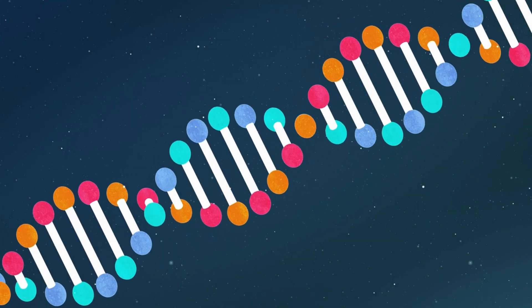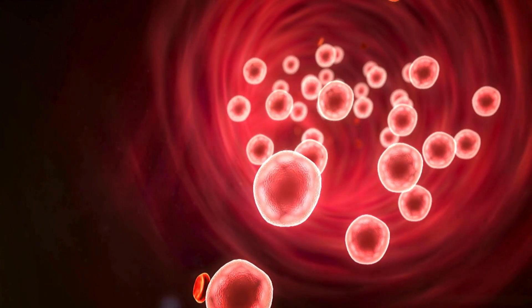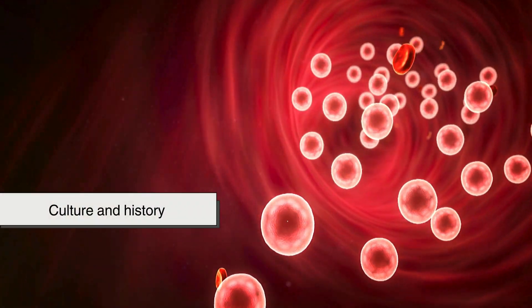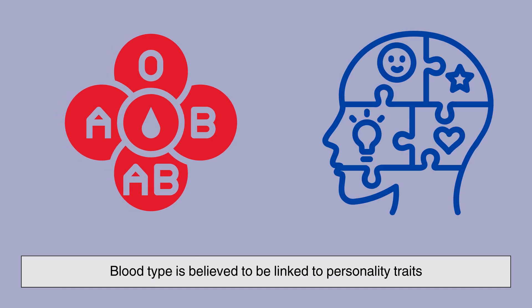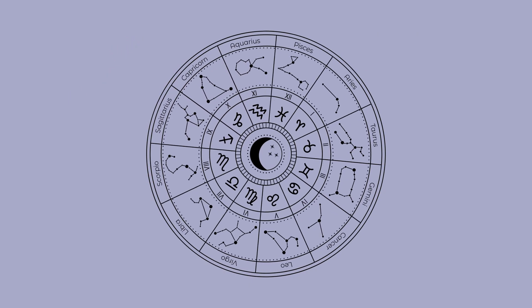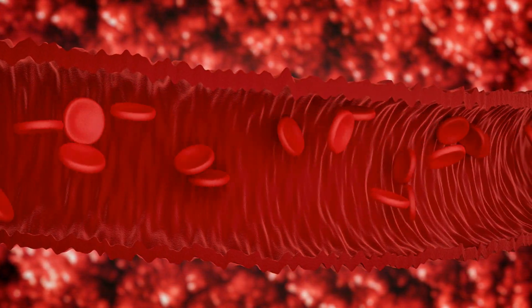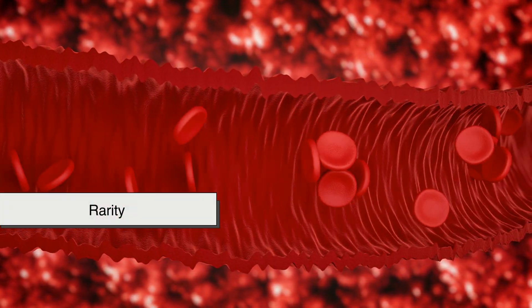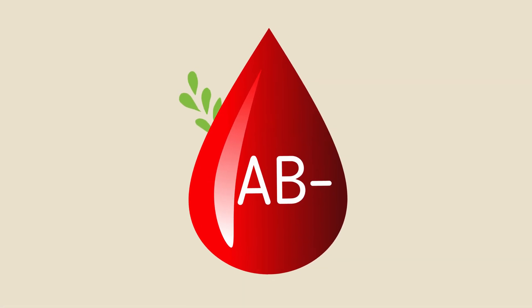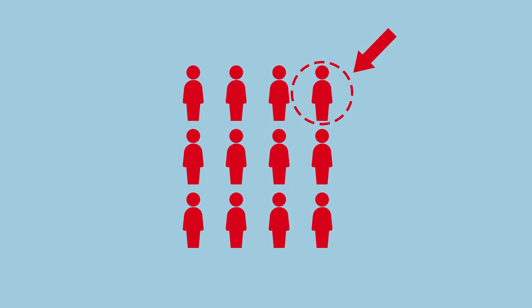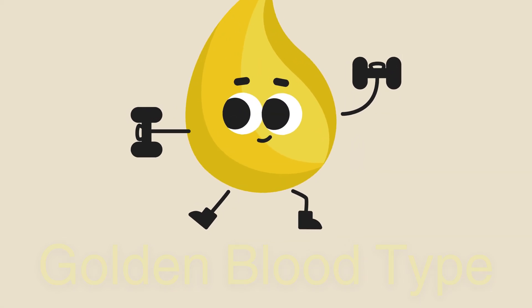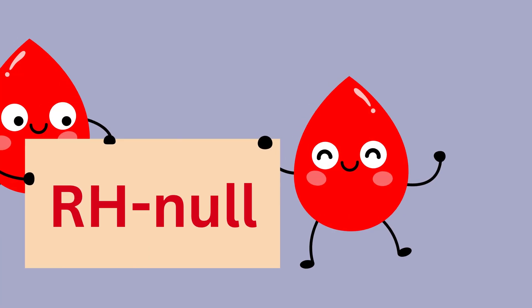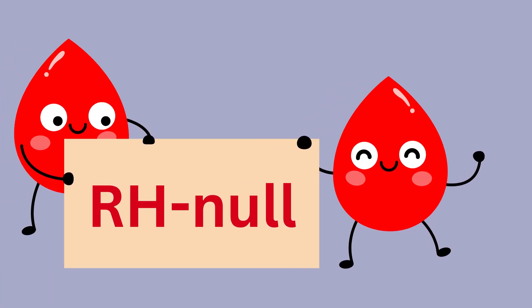Beyond medicine and genetics, blood types have also played interesting roles in culture and history. In Japan, blood type is believed to be linked to personality traits, similar to how astrology is viewed in Western cultures. Another fascinating aspect of blood types is their rarity — for example, AB negative is the least common, making up less than 1% of the population. There is also a phenomenon known as the golden blood type, or Rh null, which is one of the rarest in the world.